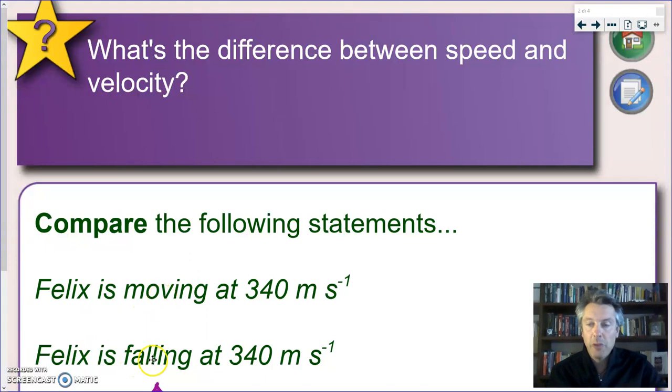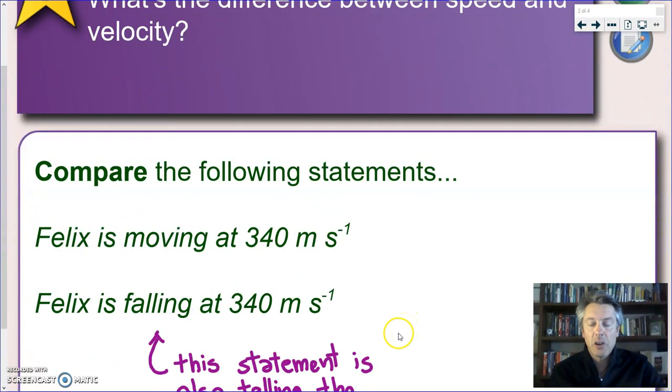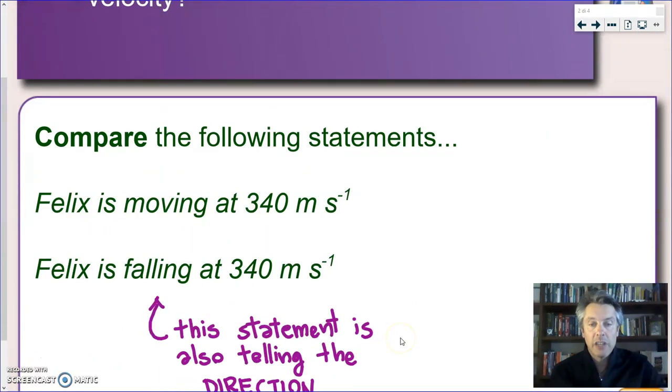I mean, they're both referring to a movement, but falling is a very specific movement. It's a movement downwards. So, what is the big difference? It's that the second statement is talking also about direction.